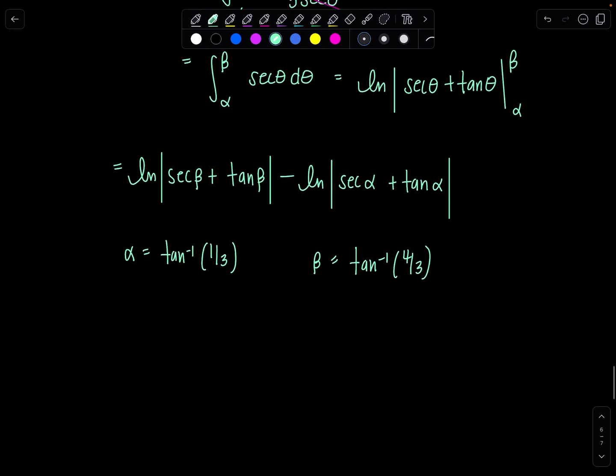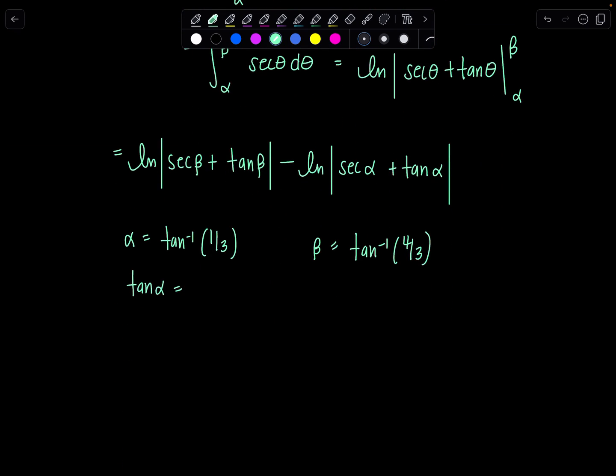From here, this means tangent of alpha is one third, tangent of beta is four thirds. And I'm going to draw two triangles that represent the following. So here's alpha. If tangent of alpha is one third, that means ratio of opposite over adjacent is one over three, and so this would be square root of 10. And then over here, tangent of beta is four thirds. So here's beta, opposite over adjacent. And then this missing side is five. We love a good three, four, five triangle, don't we? Nothing could be better.